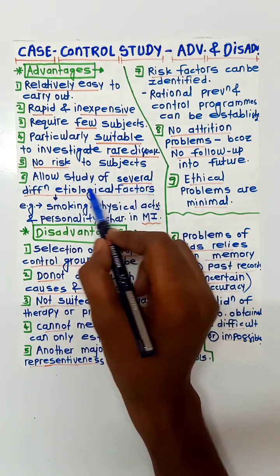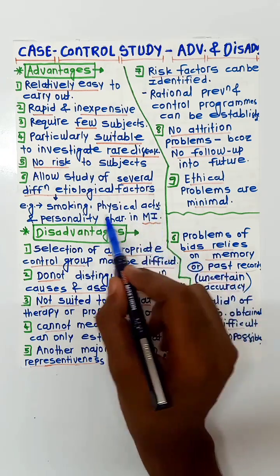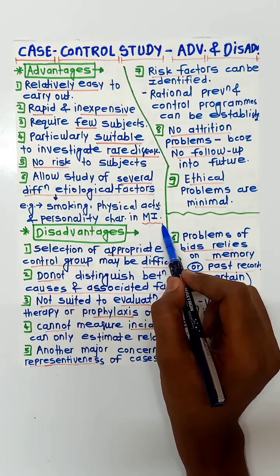It allows the study of several different etiological factors, for example: smoking, physical activity, personality characteristics in myocardial infarction.